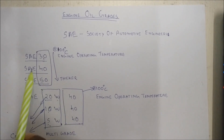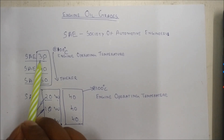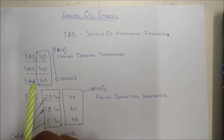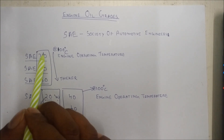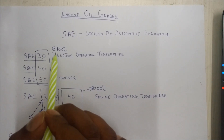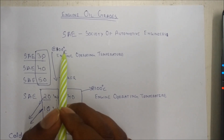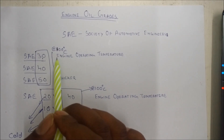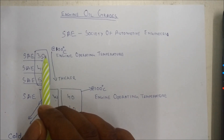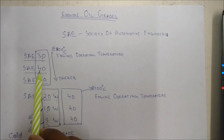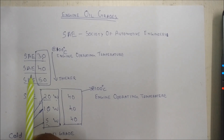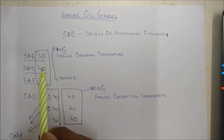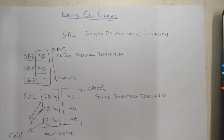Engine oils graded as SAE 30, SAE 40, and SAE 50 have been tested only at 100 degrees Celsius, the engine's operating temperature. These kinds of engine oils are used in very basic engines like lawn mowers.